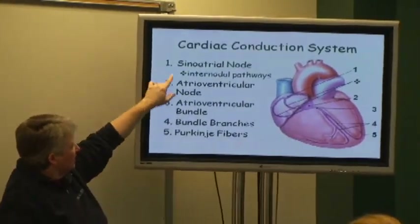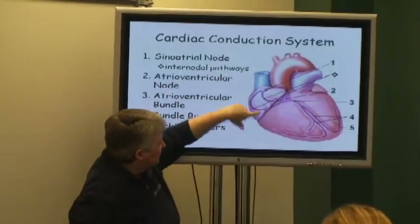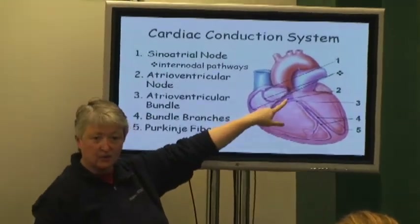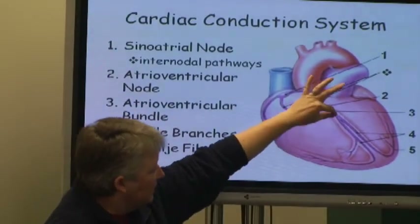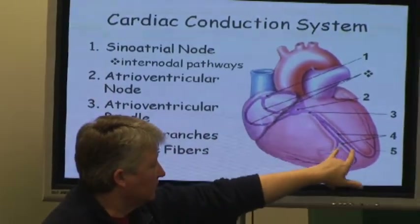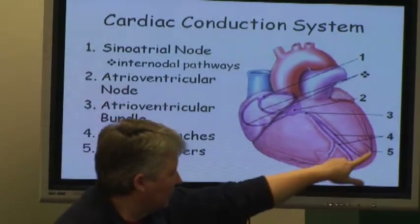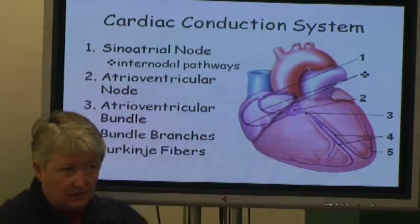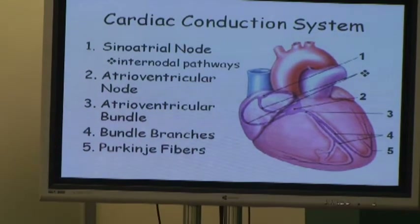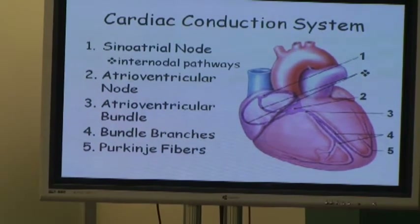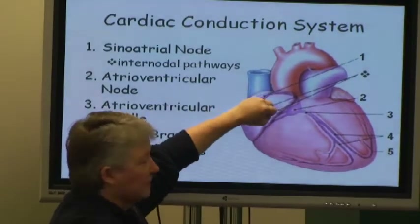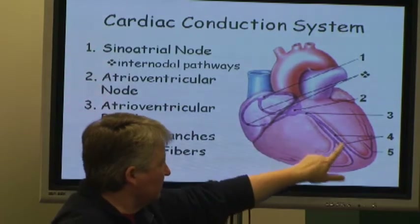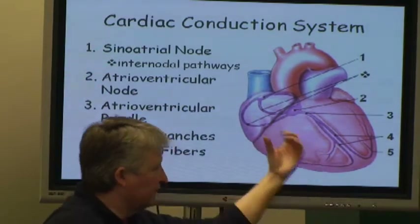What normally happens is the cells of the SA node generate a signal. That signal passes through the internodal pathways to the AV node — the atrio-ventricular node — between the atria and the ventricle. Then the signal passes down through the AV bundle, splits into the bundle branches, and the Purkinje fibers take it up the lateral side of each ventricle. As the signal moves from the SA node to the AV node, the atria contract; then once the signal comes down through the middle and up the sides, the ventricles contract.